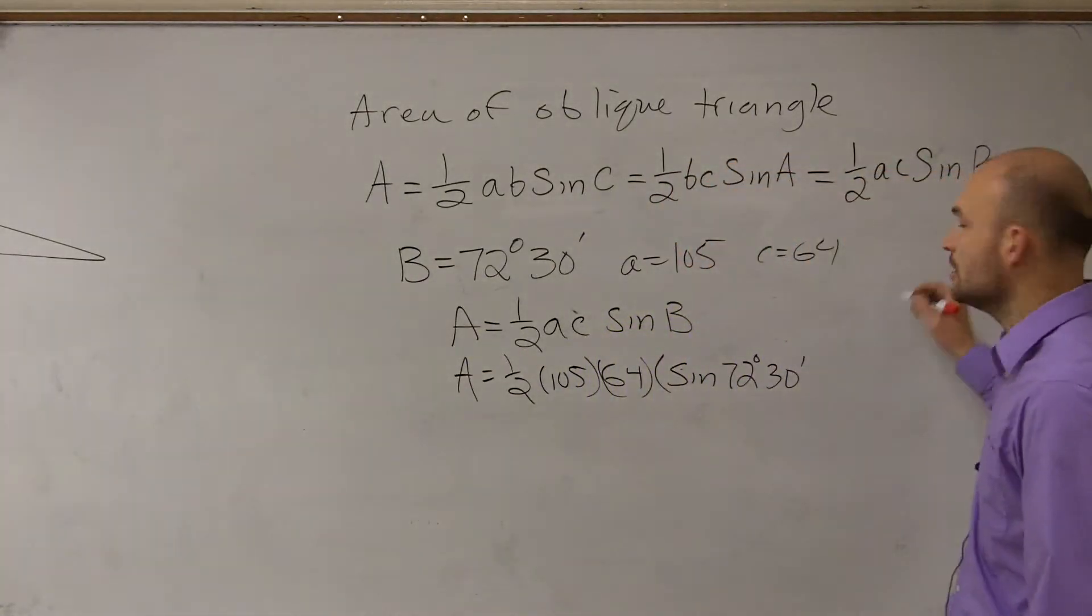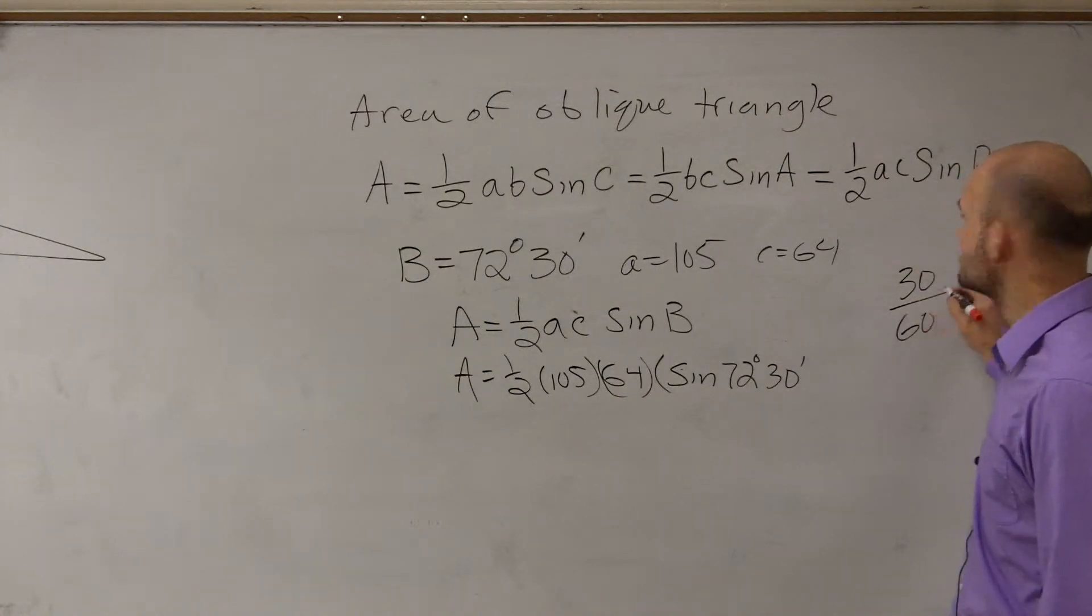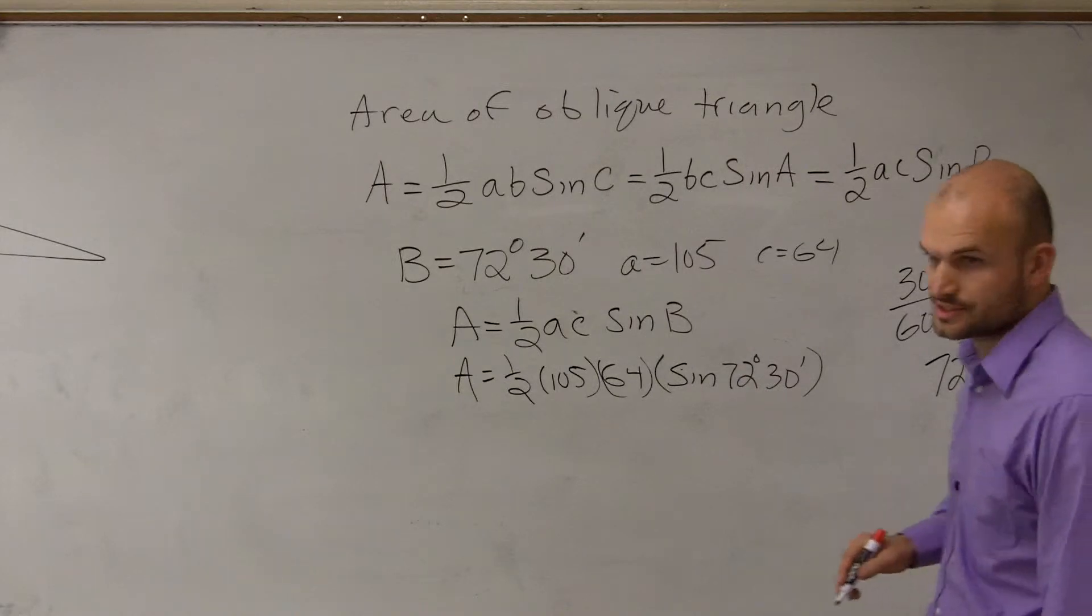Now remember, ladies and gentlemen, what is 30 minutes? We take 30 and put it over 60 minutes, which equals 0.5. So when you plug that in your calculator, you can just do 72.5 degrees.